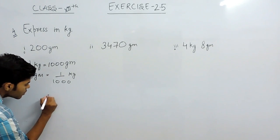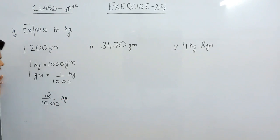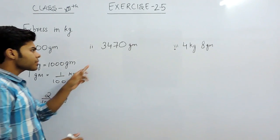So, 200 grams will be equal to 2 upon 1000 kgs and this is the answer of part 1.